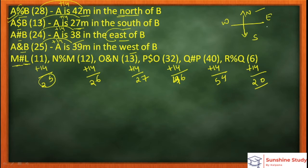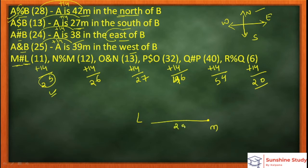Now the direction is North, and this is South. Left direction means West. So M is East of L — we place L, and M is to the East of L at a distance of 25 meters. Now, percentage means North — N is North of M. N comes above, at a distance of 26 meters.